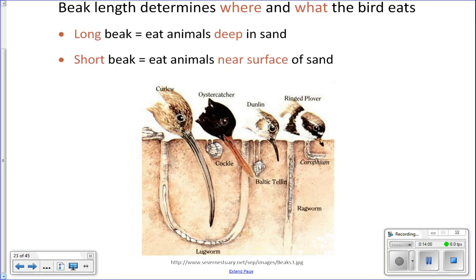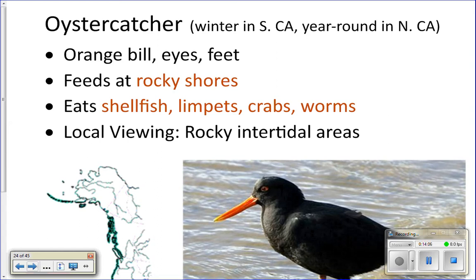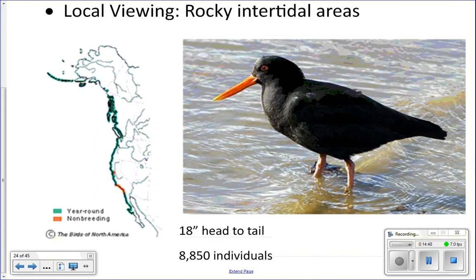We're only going to briefly mention some birds you'll see in California. One is the oyster catcher — you can identify it by its black body with orange eyes, beak, and feet. It eats clams, shellfish, limpets, crabs, and worms at rocky shorelines. It's about 18 inches head to tail, and its range extends from Baja California all the way up the coast to Alaska.